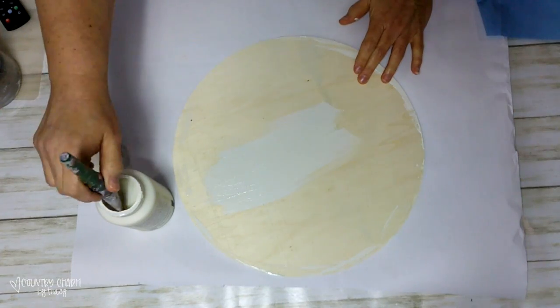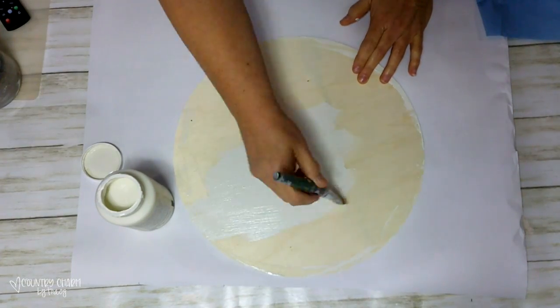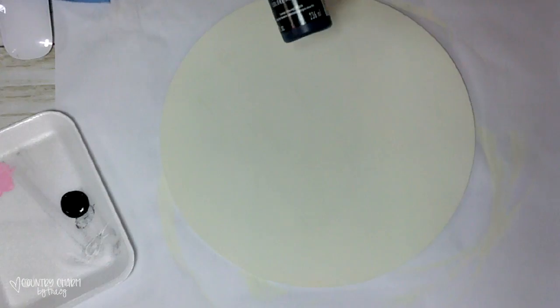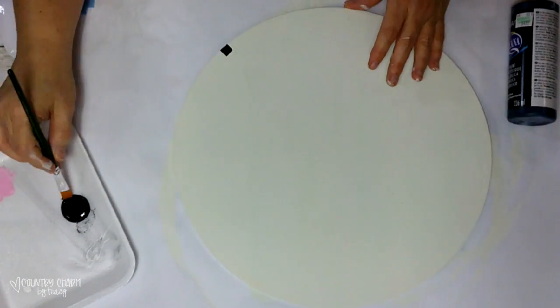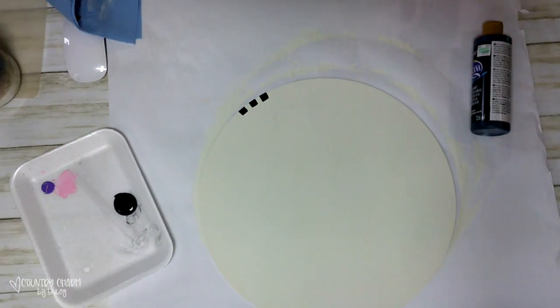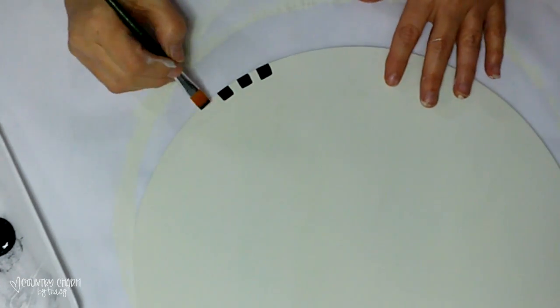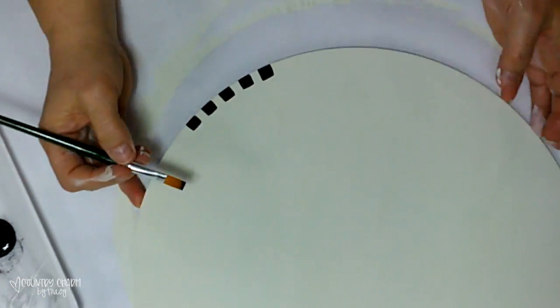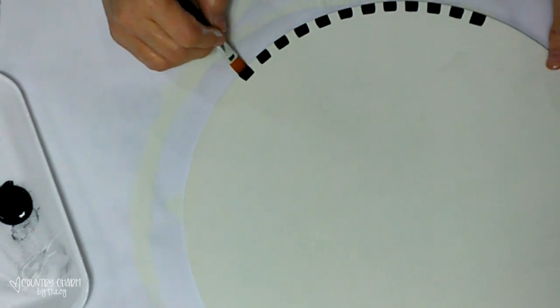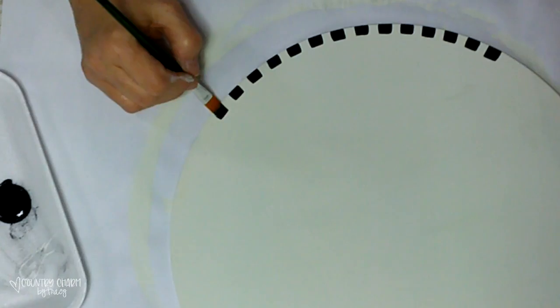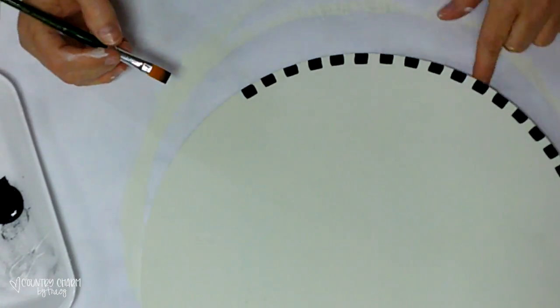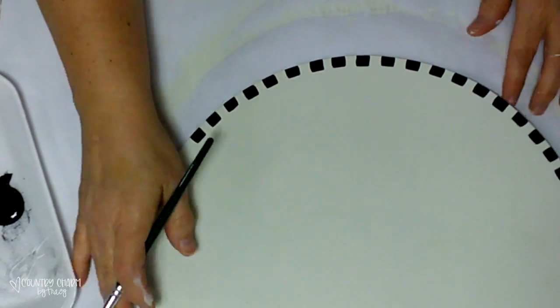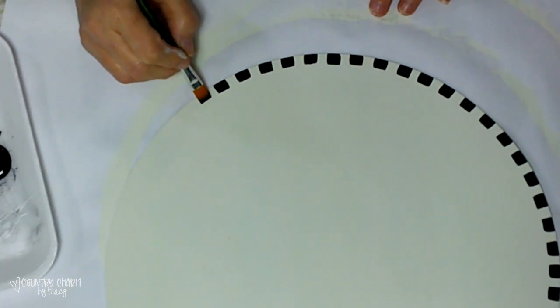I'm using a half inch flat paintbrush and some black paint, and I'm just starting somewhere and going around the edge of the sign. I have been doing this for so long that I kind of know how to eyeball it, but if you want to pull out your ruler or a tape measure or use a mat to kind of space out your checkerboard, then that would be an option for you to use.